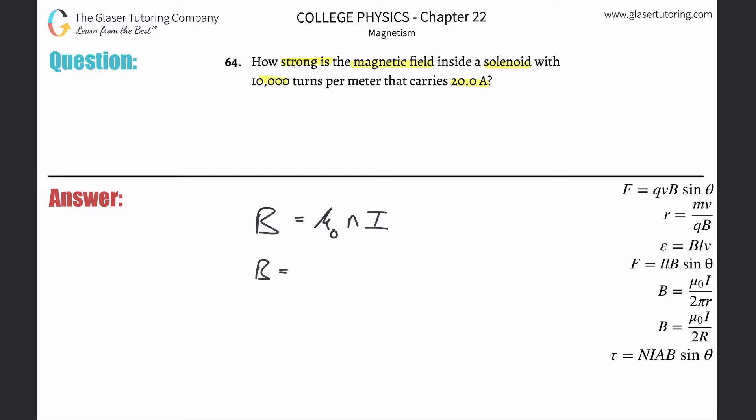All right, so basically it's a very simple formula. Add this to your toolkit. This is simply going to be 4π times 10 to the minus seventh, because that's the permeability of free space. The number of turns per meter they told you was 10,000, so just plug that on in. And the current here is 20 amps.